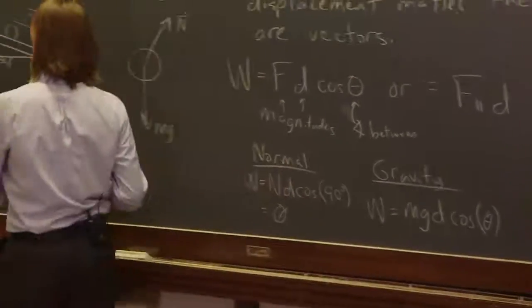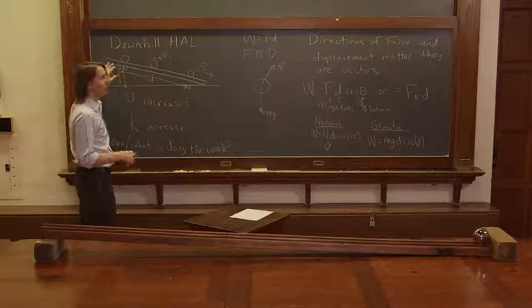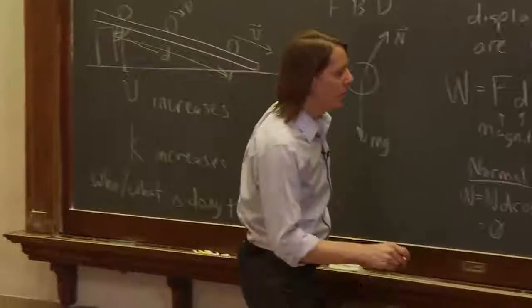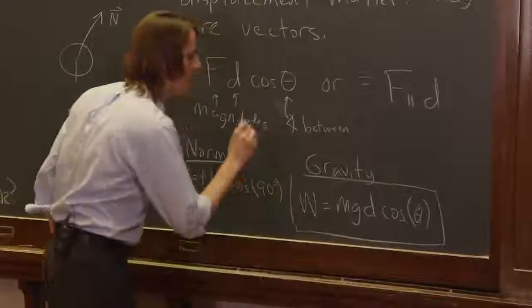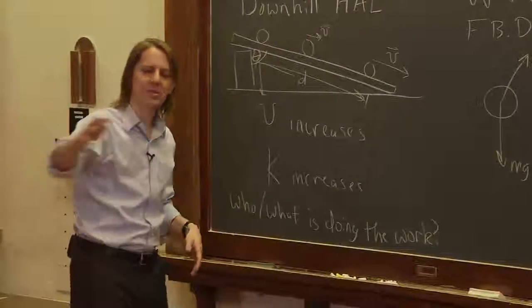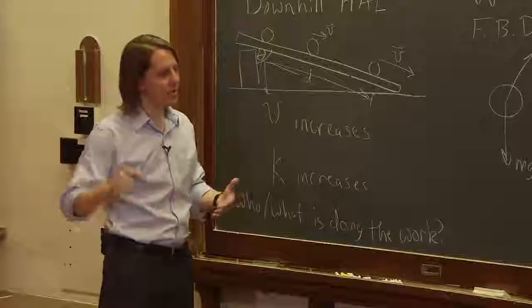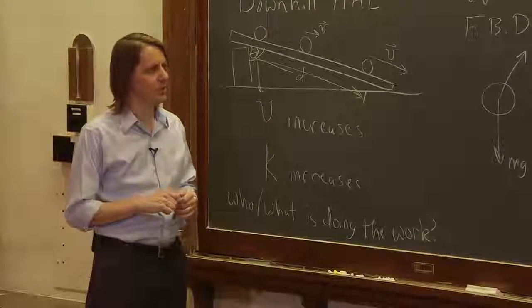Usually when we set this problem up, we call this theta. But actually for this problem, this is theta. Or you could switch from cosine to sine. That would be confusing. So let's just keep calling it cosine. So this is where the work is done. The work that gave it kinetic energy was done by gravity. And just like the acceleration is slowed down by going at an angle, how quickly you give it work is also slowed down by going at an angle. So gravity can do work on an object to change its kinetic energy.